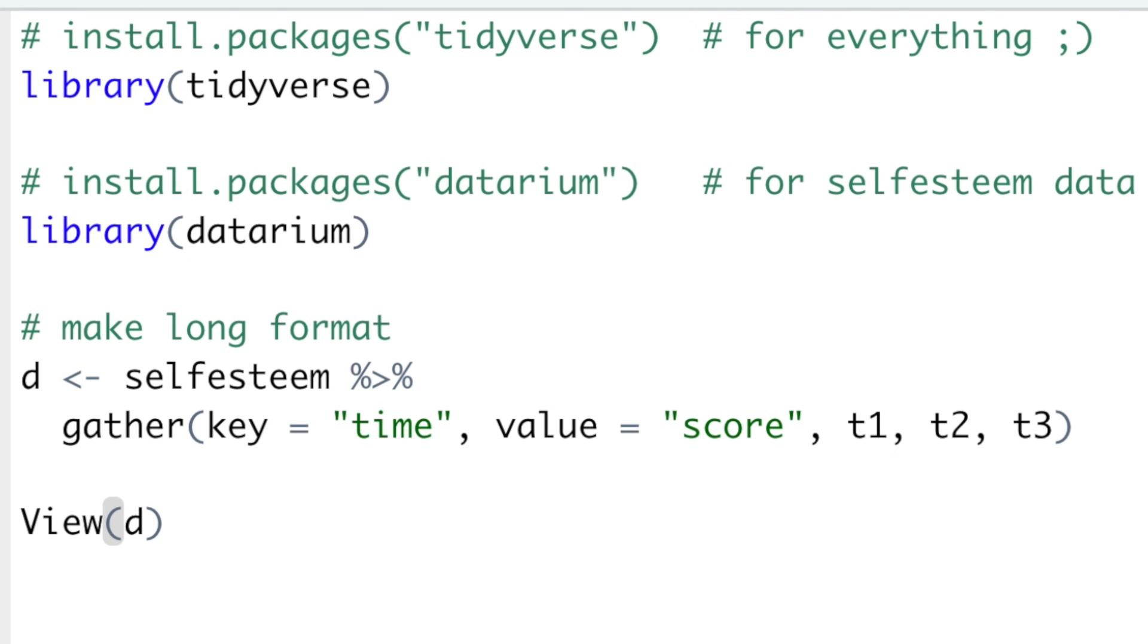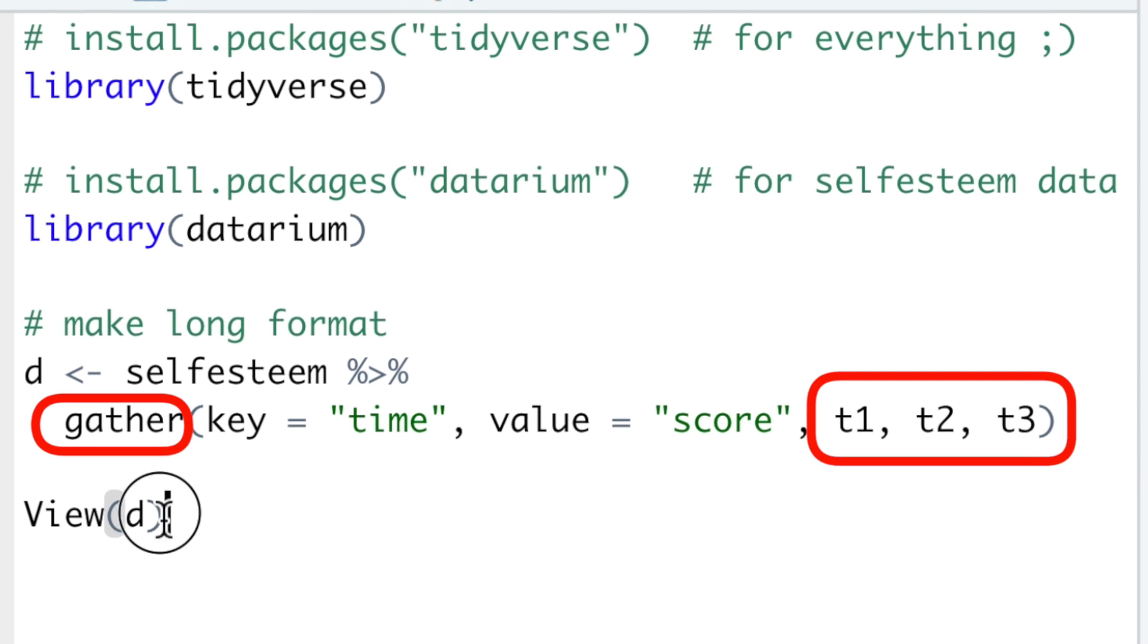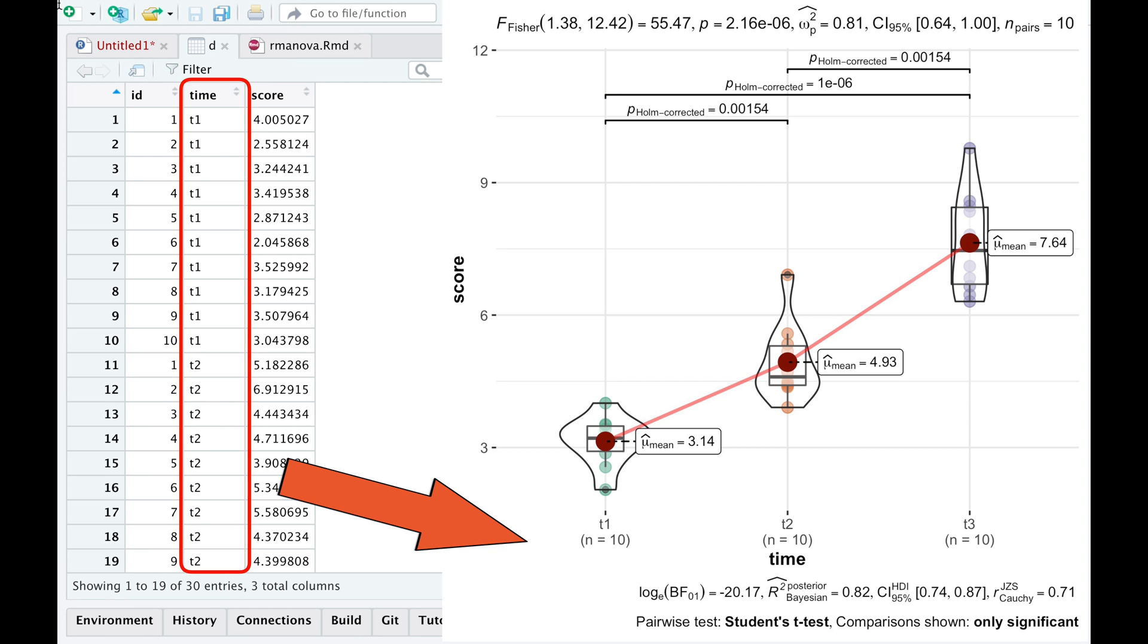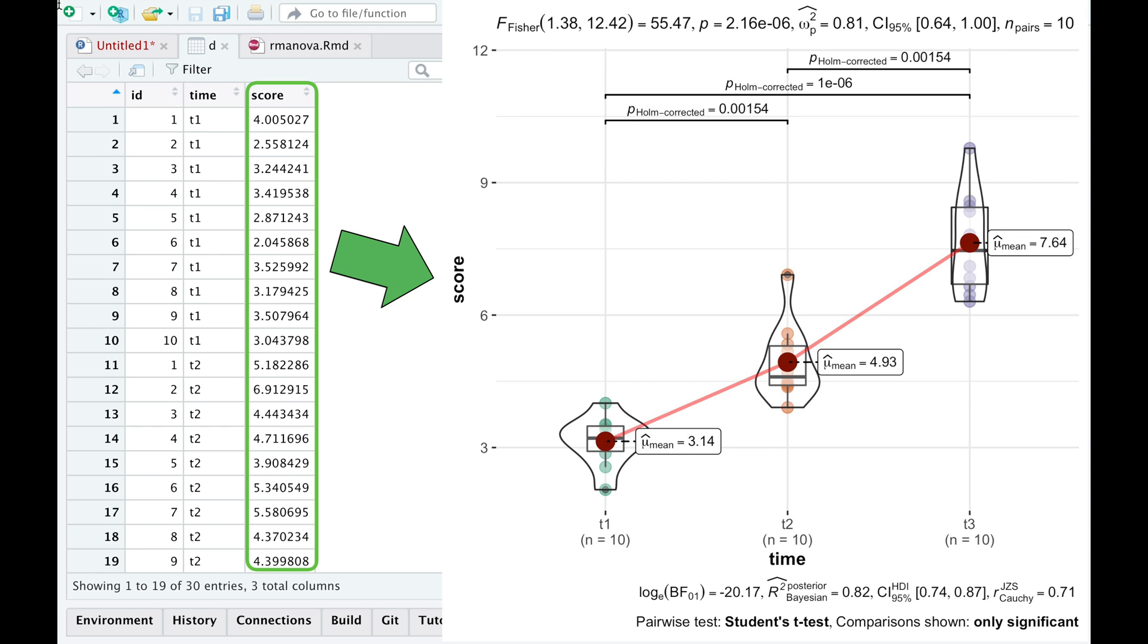For that, let's take self-esteem data from datain package and gather all three time points into one column, so that our time points become a variable on the x-axis of the plot, and our self-esteem scores become our variable for the y-axis of the plot.